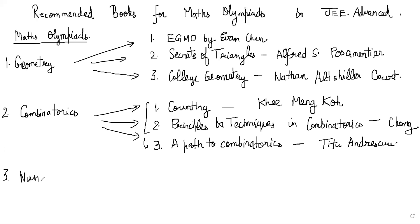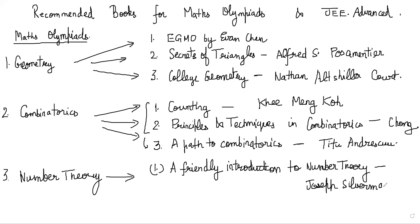If you go to number theory, I have another three recommendations here. Three recommendations are: first one is A Friendly Introduction to Number Theory by Joseph Silverman. Then there is Modern Olympiad Number Theory by Aditya Khurmi. That's a nice book.